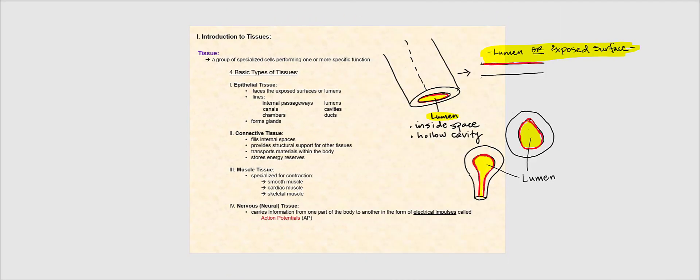This chapter is all about tissues. A tissue is a group of specialized cells performing one or more specific functions. We have four basic, or general, or principal types of tissue.